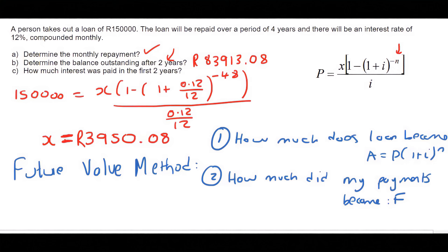Let's see how much that loan would become after two years. So what we do is we say 150,000, and then we say 1 plus, and then the interest rate is 12%, compounded monthly for two years. So that would be 24 months.